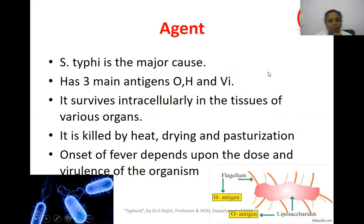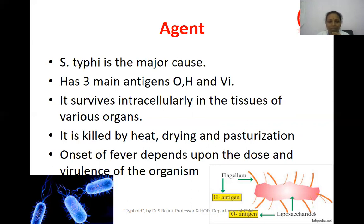Salmonella Typhi is the major cause and it has 3 main antigens. If the patient is positive for the O, H, and Vi antigens, we say the patient is having Typhoid Fever. It survives intracellularly in tissue. The onset of fever depends upon the dose and virulence of the organism — the larger the dose and the greater the virulence, the more severe the infection.